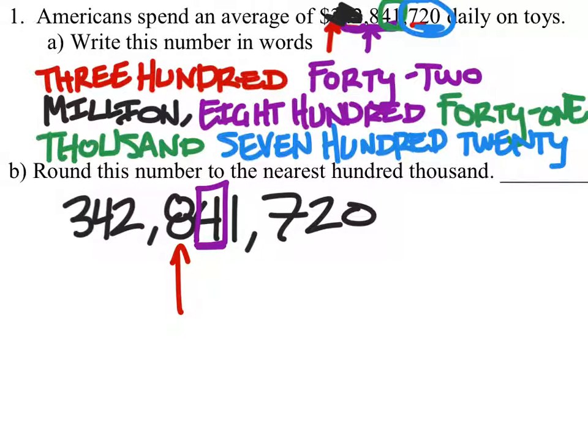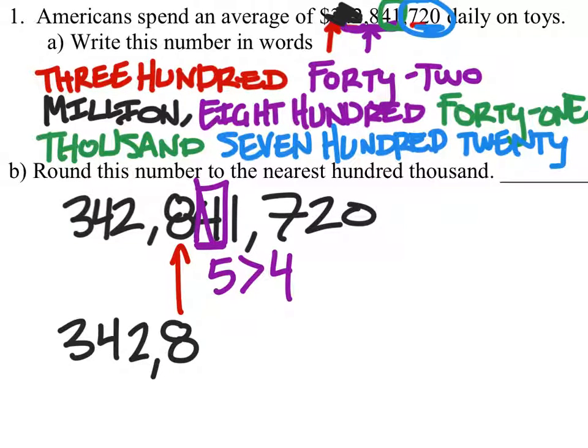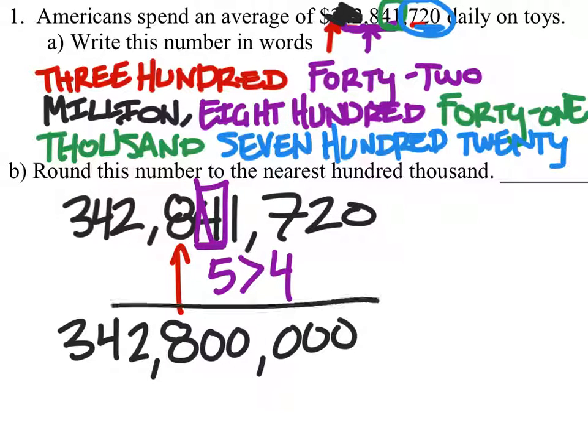And if it's going to change, the number to the right has to be 5 or bigger, which would involve us rounding up. Since that number is not greater than 5, if we compare 5 and 4, 5 is greater than 4, so we are not going to round up. So what this does is it keeps the 8 an 8. The numbers to the left stay the same, and the numbers to the right will change to 0's. And now we've rounded this to the nearest 100,000.